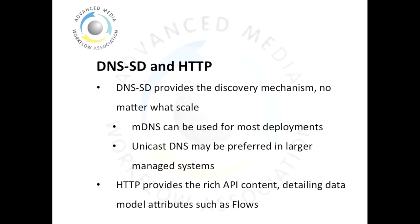In most deployments, multicast DNS would be used, but in the largest of systems, it may be desirable to use unicast DNS. As with the node discussed in the last screencast, all of the discovery APIs are accessed over HTTP.